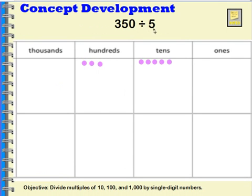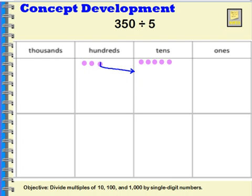Let's think about three hundred and fifty divided by five. I'm representing that I have three hundred and fifty — three hundreds and five tens. Now if I want to divide that into five groups, I start with my hundreds. But I don't have five hundreds, so I can't put one hundred in each group. I'm going to have to unbundle, or decompose, this group of hundreds. I'll draw a line through it with an arrow pointing to my tens, trading one hundred in for tens. Ten times ten is one hundred, so I have ten tens.